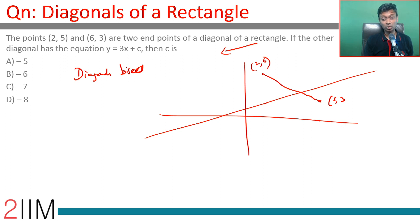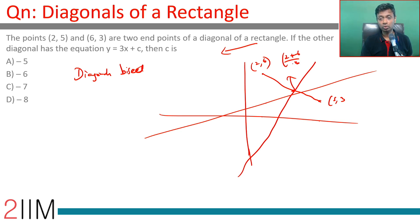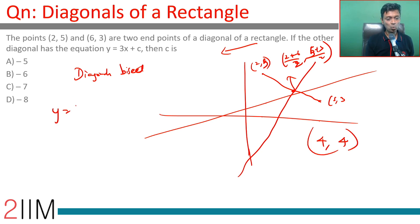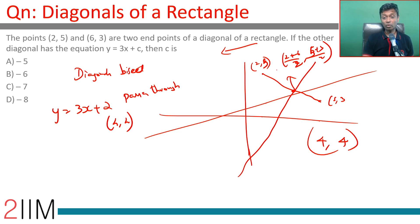The diagram looks like the other diagonal passes through the midpoint. The midpoint of (2, 5) and (6, 3) is: (2 + 6)/2 comma (5 + 3)/2, which gives us 8/2 comma 8/2, so the midpoint is (4, 4). The equation y equals 3x plus c passes through the point (4, 4).